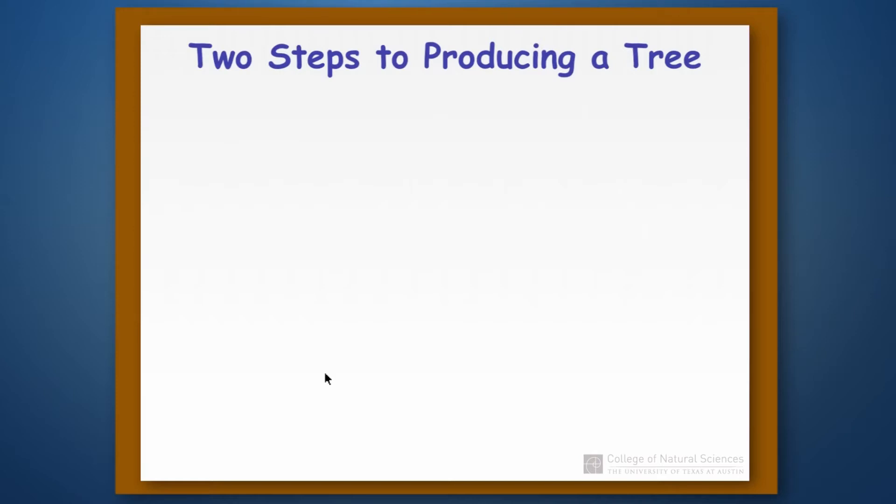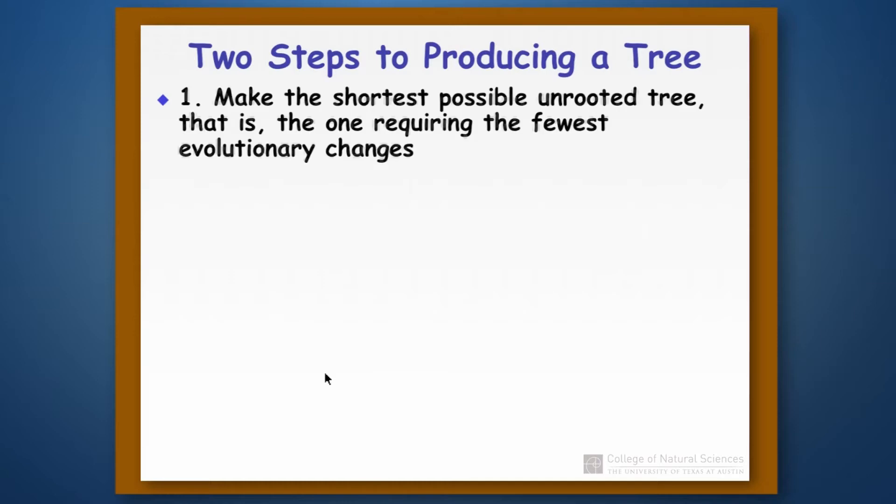When we produce a phylogenetic tree there are two steps to getting a tree. The first step is to make the shortest possible unrooted tree, and when we say shortest what we mean is the tree that requires the fewest number of evolutionary changes, which we sometimes refer to as steps.